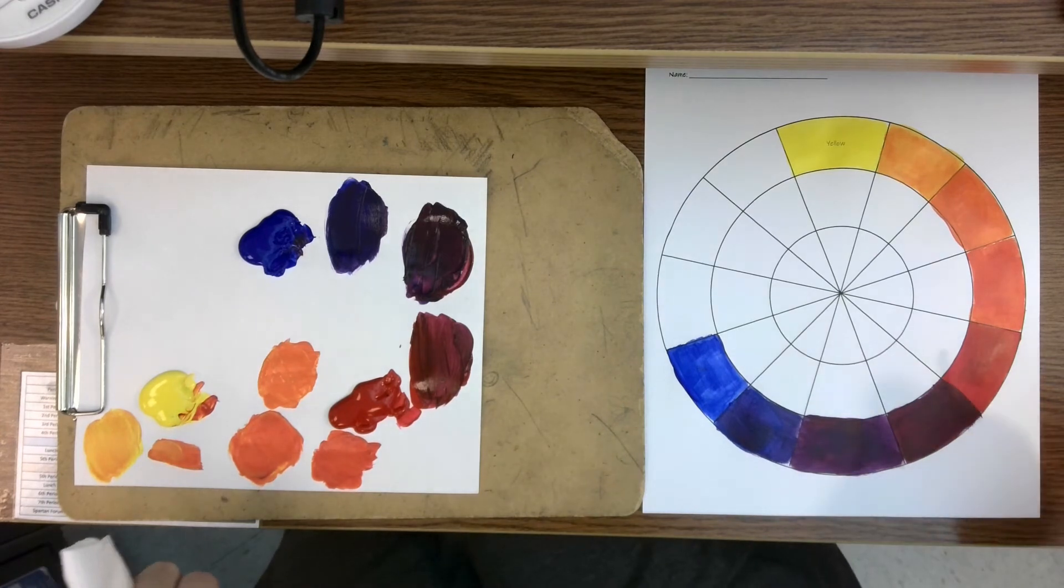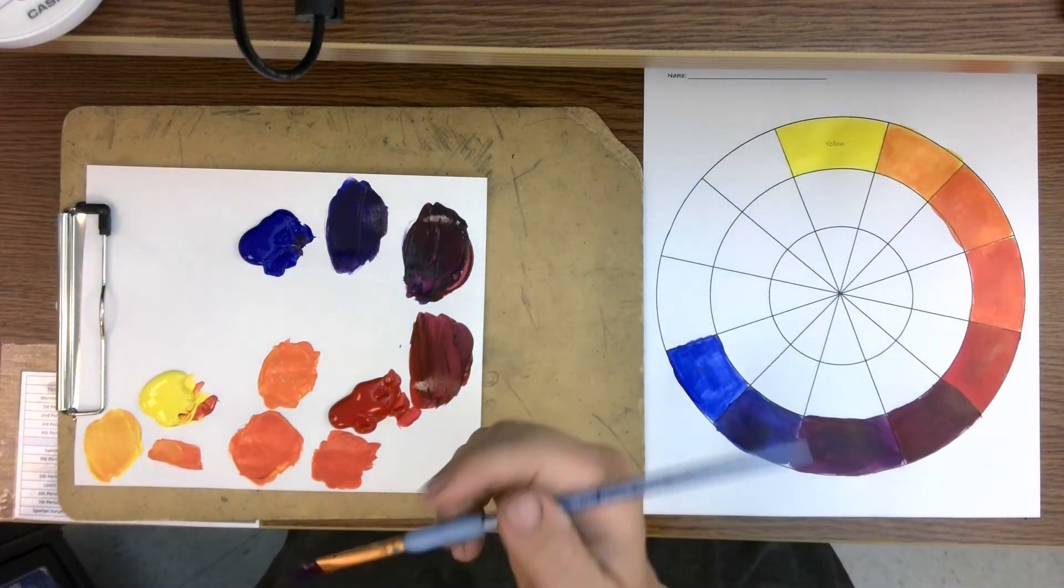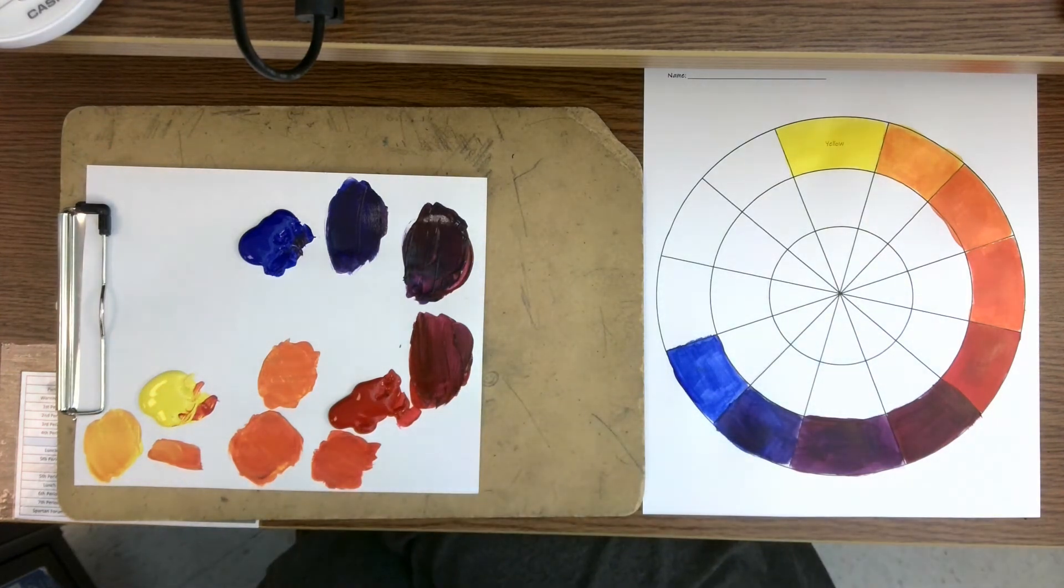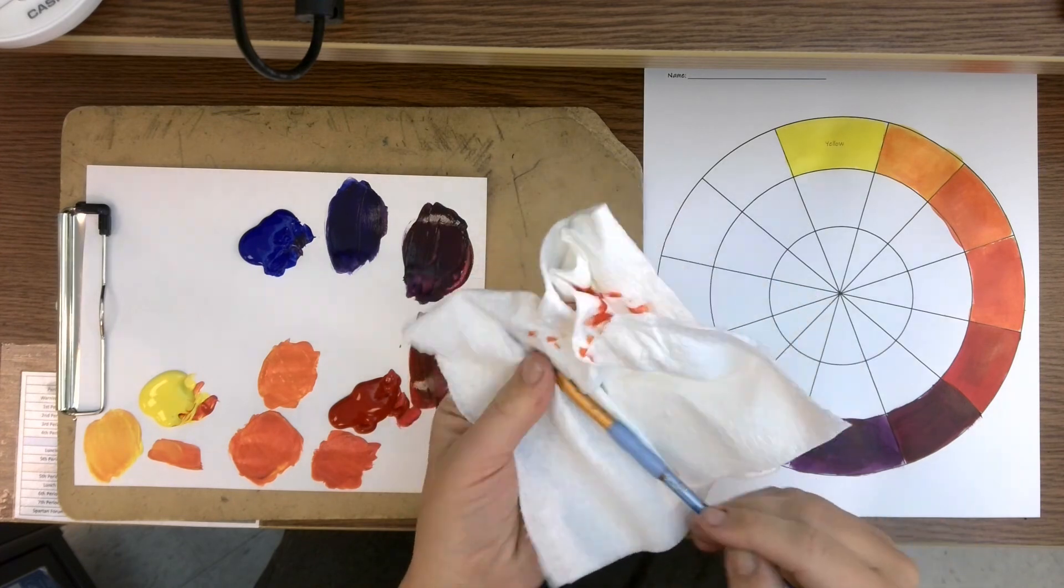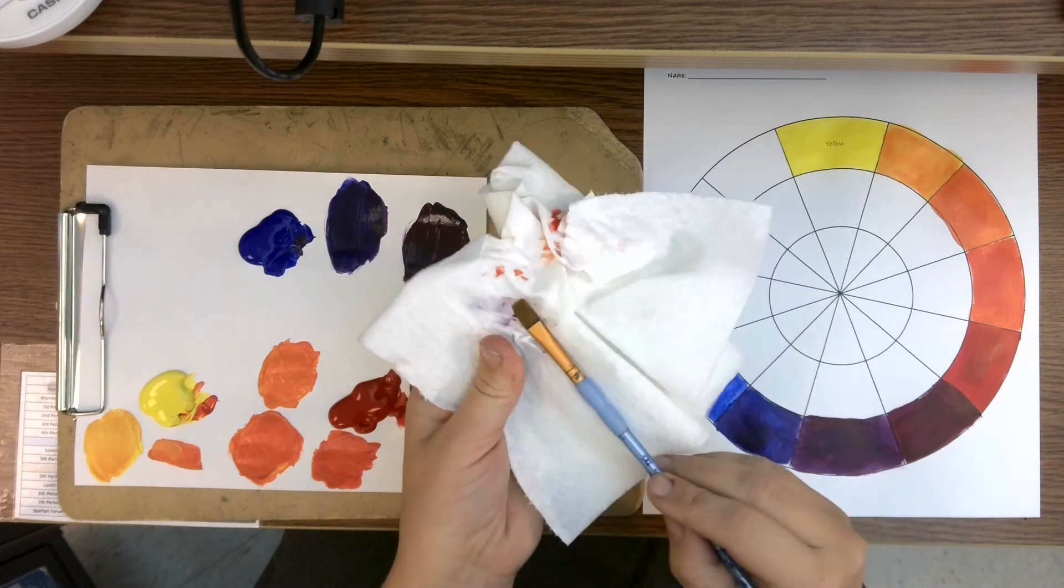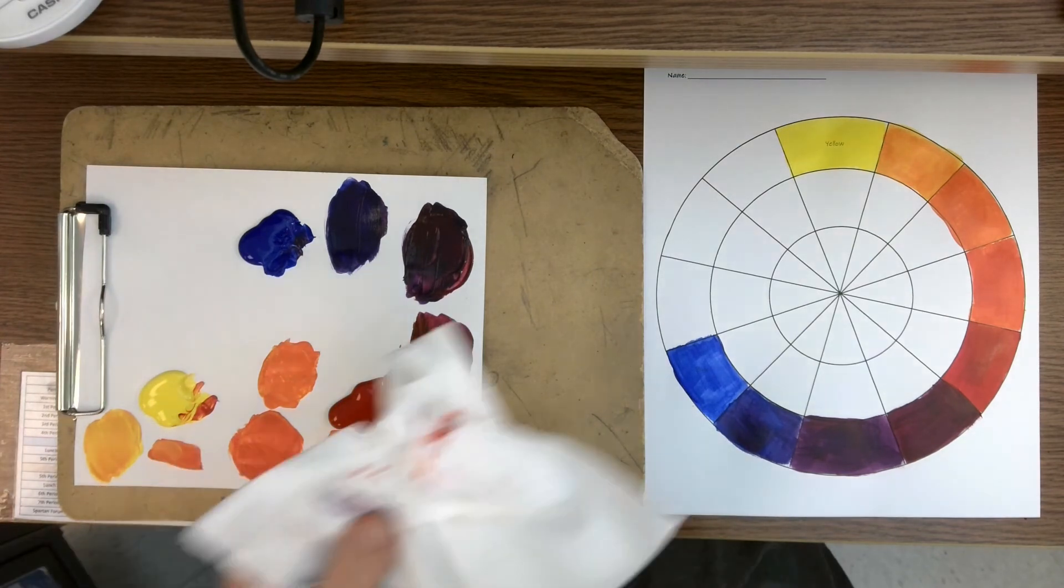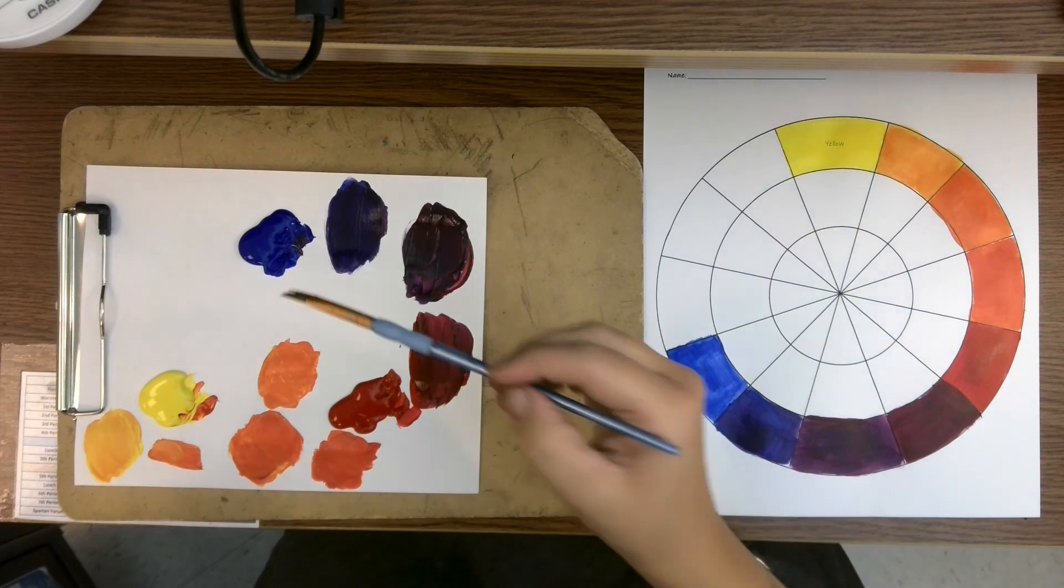Okay, and now I'm going to switch over and I'm going to do this last section, blue to yellow, which is my greens. So I'm going to wash my brush really good. I still have quite a bit of purple coming out at the base of my brush. Alright, and now I'm ready to do greens.